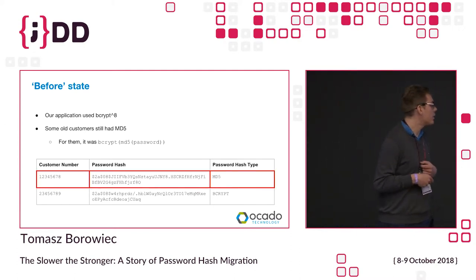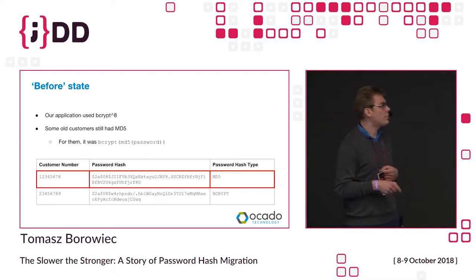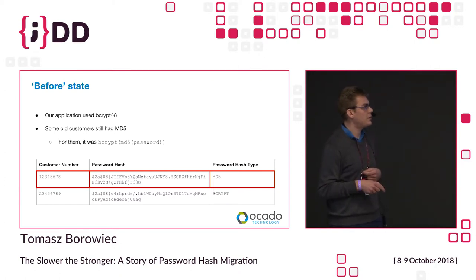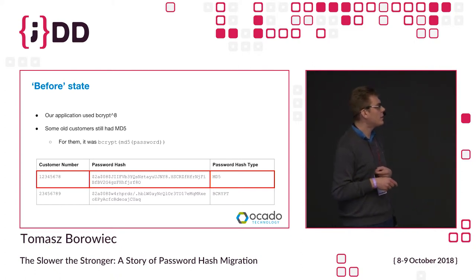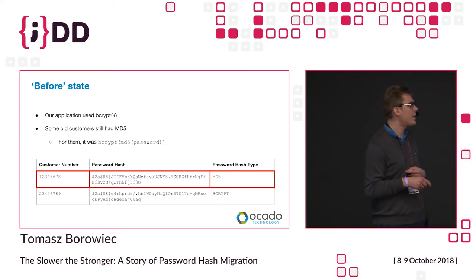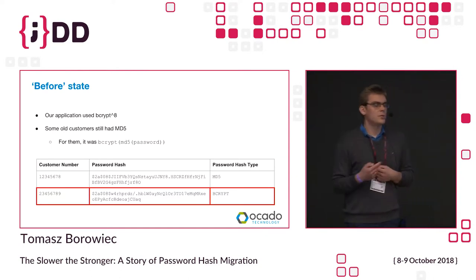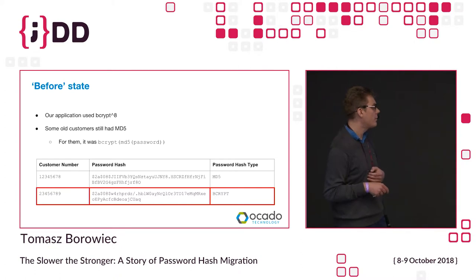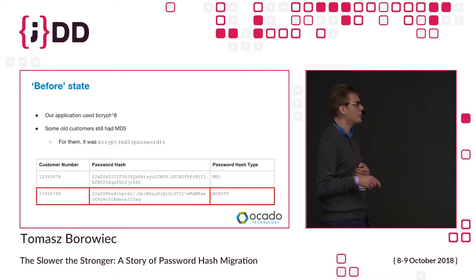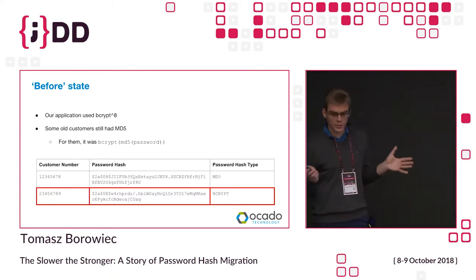When a customer comes in, we check their customer number and password hash type. If it says MD5, we first MD5 the password, then bcrypt it, and compare with the stored hash. For password hash type bcrypt, it's simpler — just bcrypt the password and compare the hash.